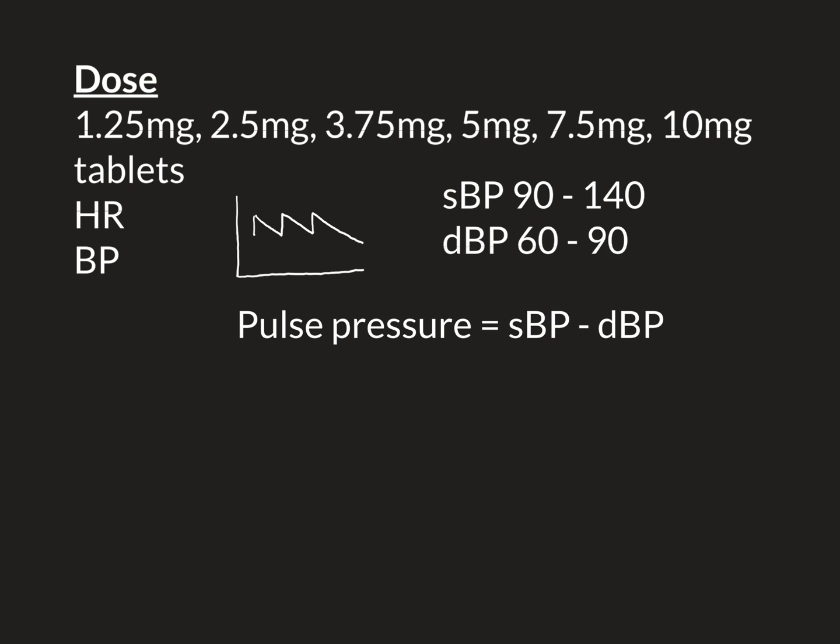To treat high blood pressure with bisoprolol, you're aiming for systolic below 140 and diastolic below 90, increasing the dose until you achieve that — provided it doesn't take the heart rate too low and the pulse pressure too high, which could cause symptomatic hypotension and risk of falls. For sinus tachycardia and rate control of atrial fibrillation, you increase the dose until heart rate is below 100, monitoring blood pressure throughout and ensuring the drug isn't making them hypotensive.